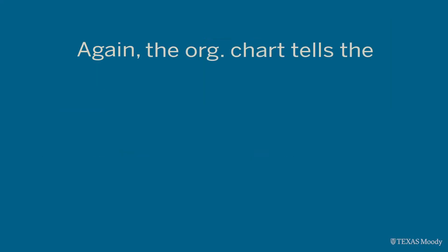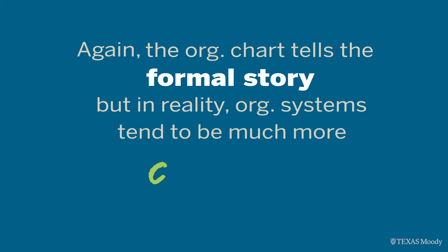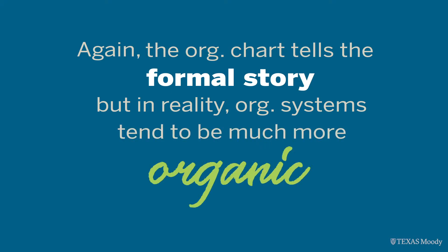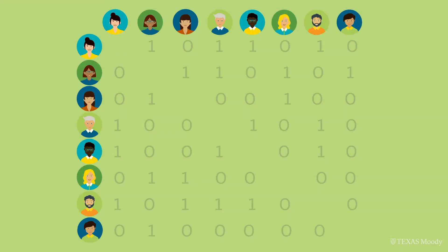The organizational chart tells the formal story. But in reality, organizational systems tend to be much more organic. For example, if we collected data about how much these folks communicate with each other, we might see a data set that looks like this. If people email someone, we put a one; if not, a zero.